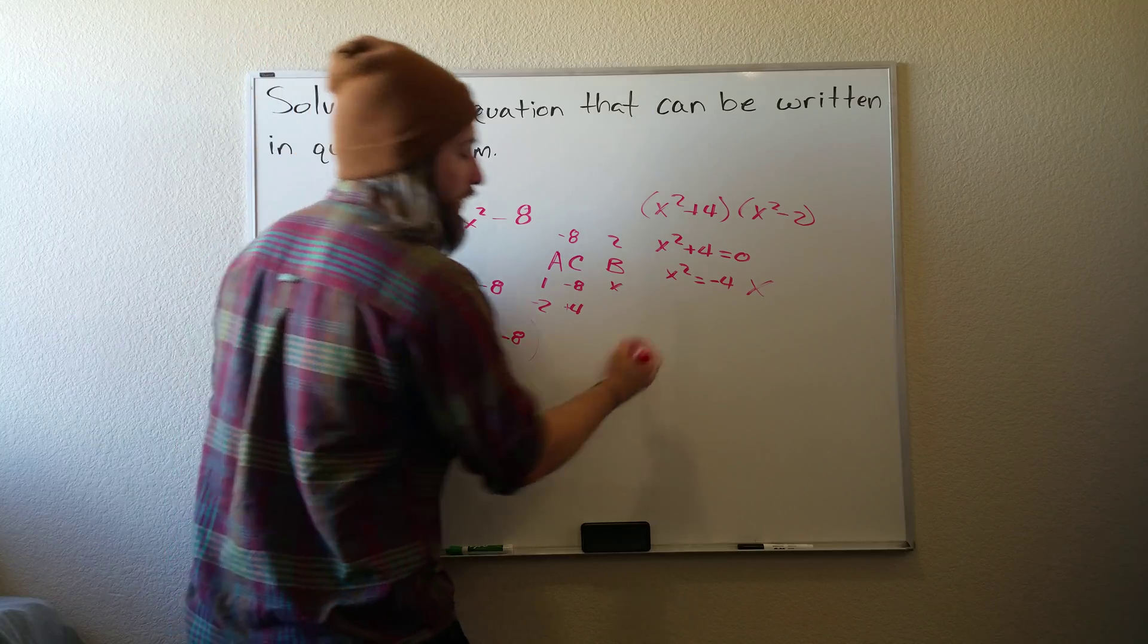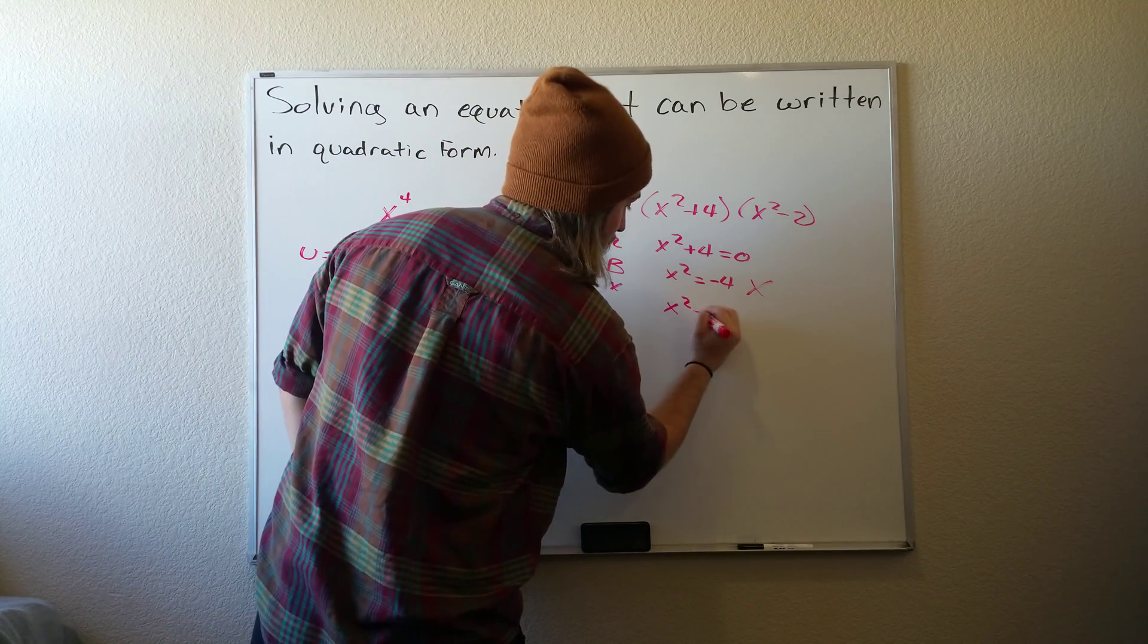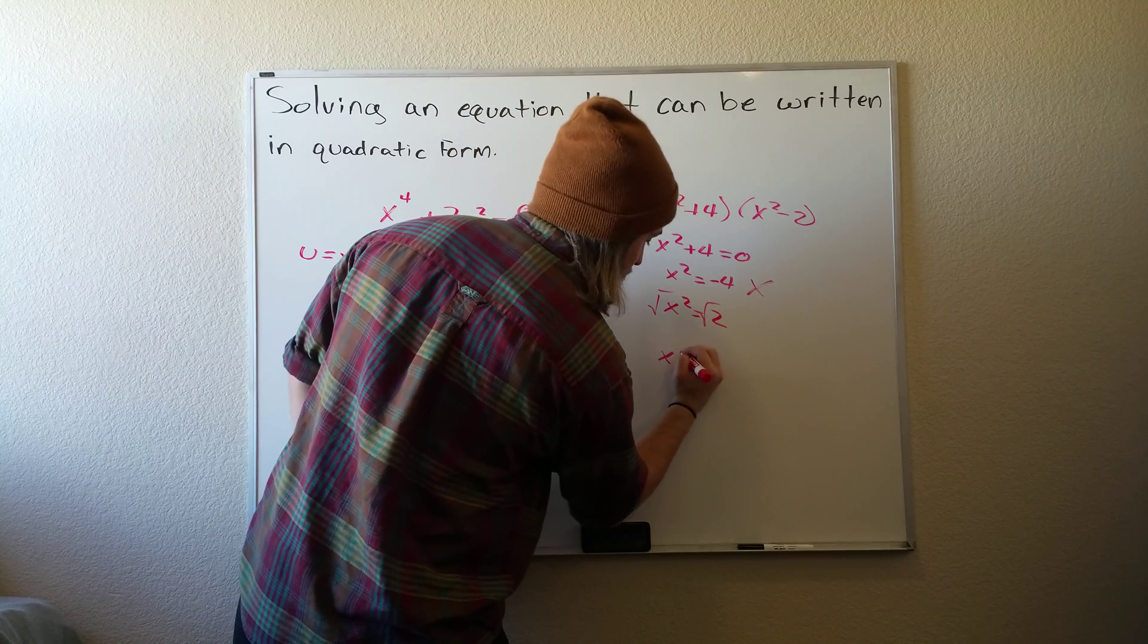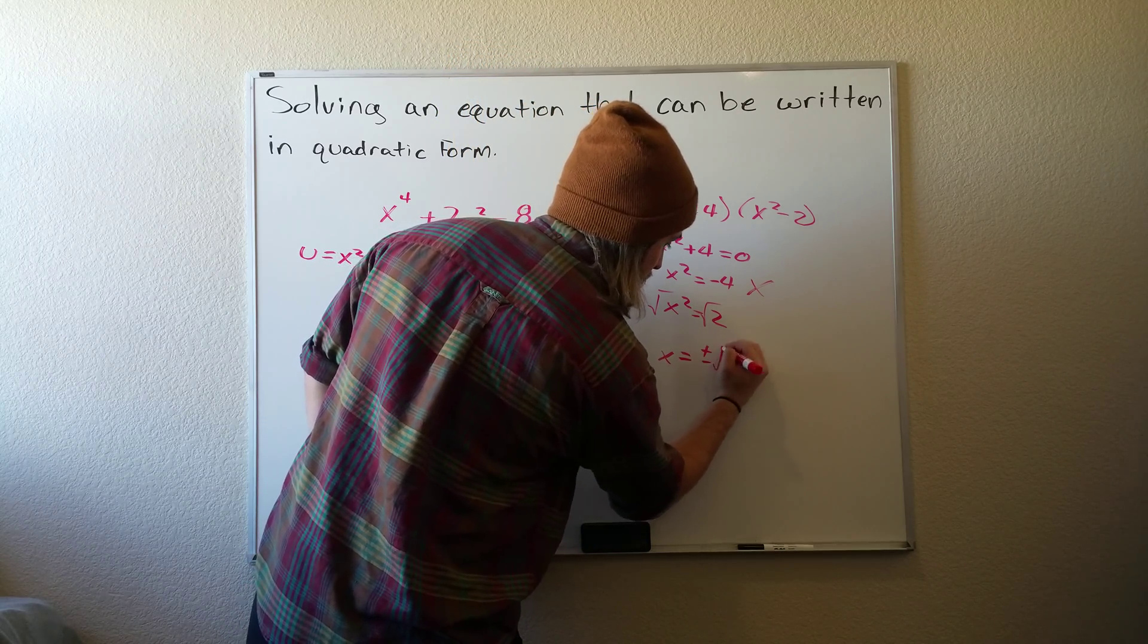And then for the second part, we get x squared equals 2. And then we'll just take the square root of both sides. So we get x equals plus or minus square root of 2.